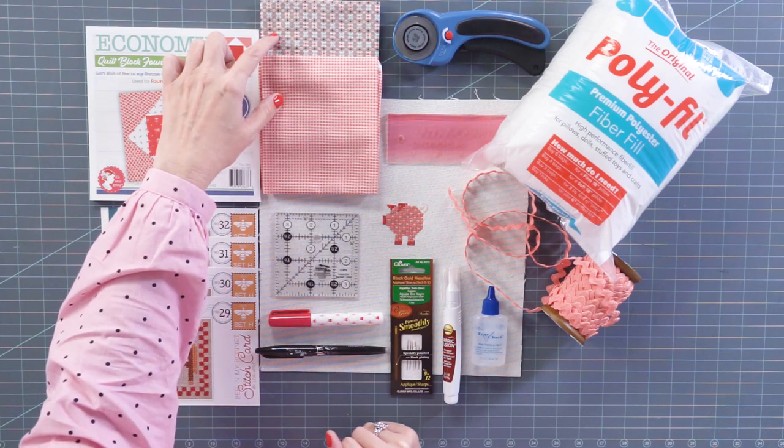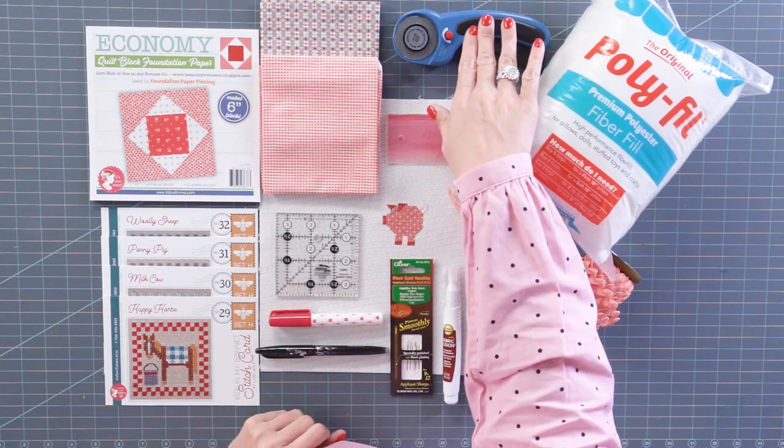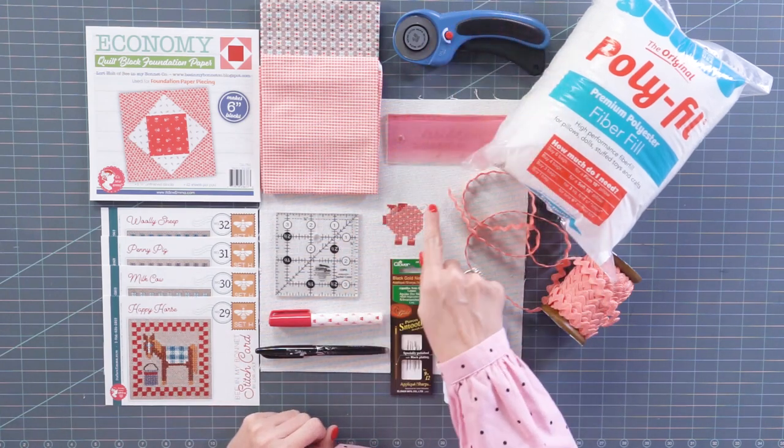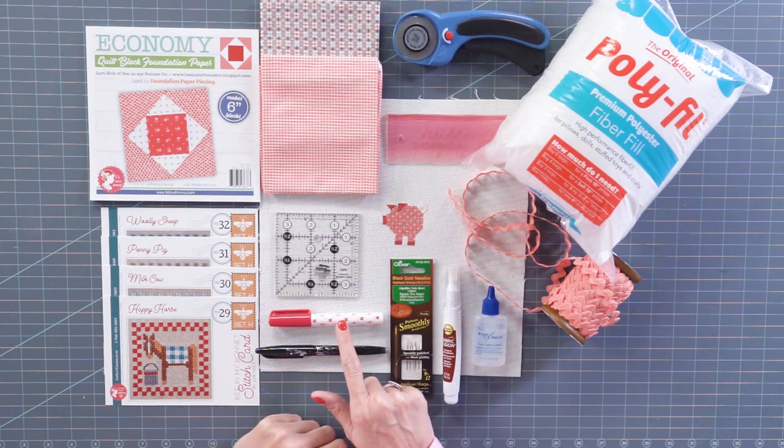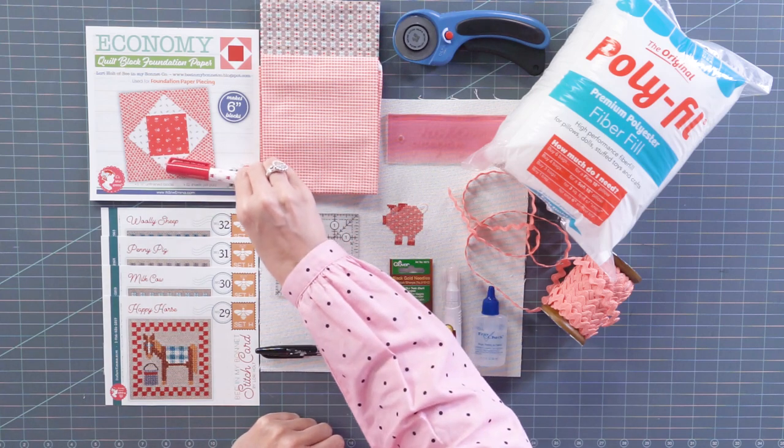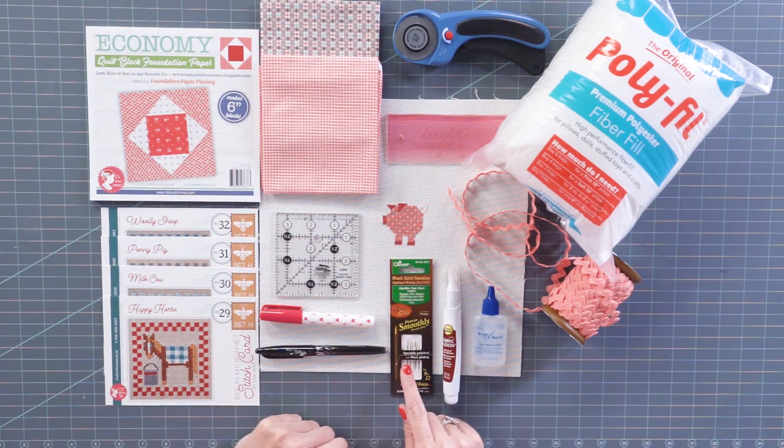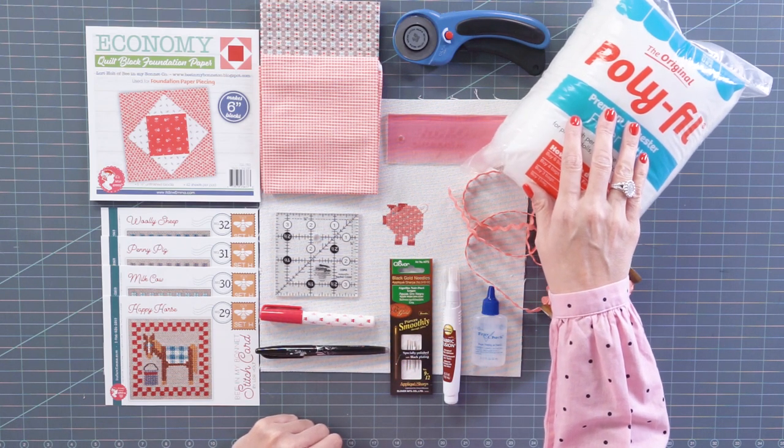You need two scraps of fabric for the front and back of your pillow, and just some general sewing supplies. We're gonna have a ruler that's gonna cut this down. We're gonna use a rotary cutter, a glue stick that's gonna work with the paper, a general marking tool, some needles, and polyfill to fill the pillow.